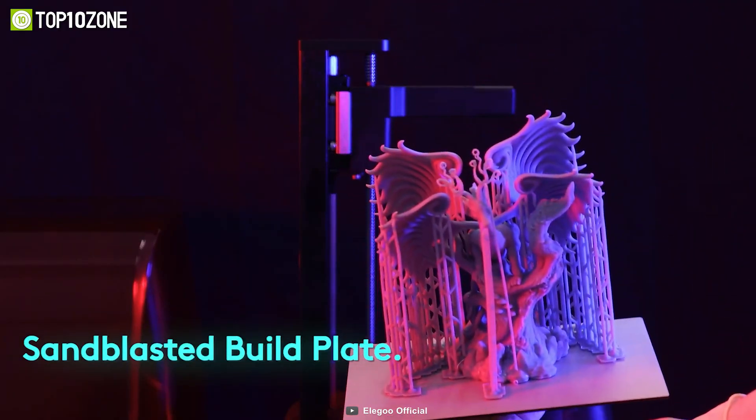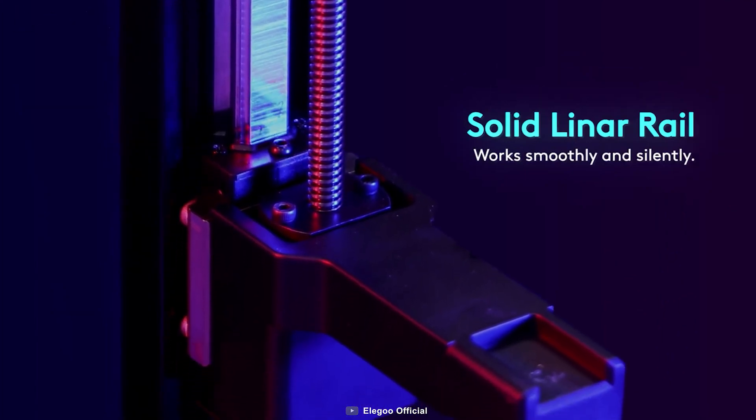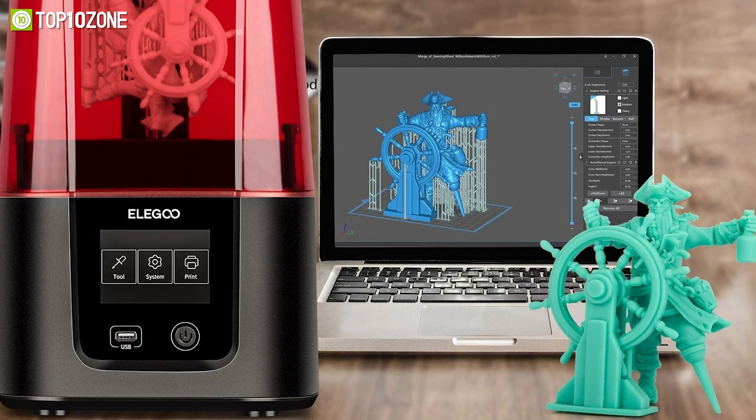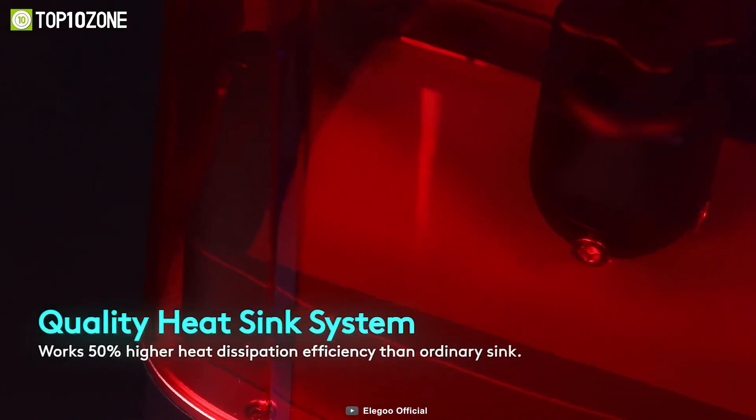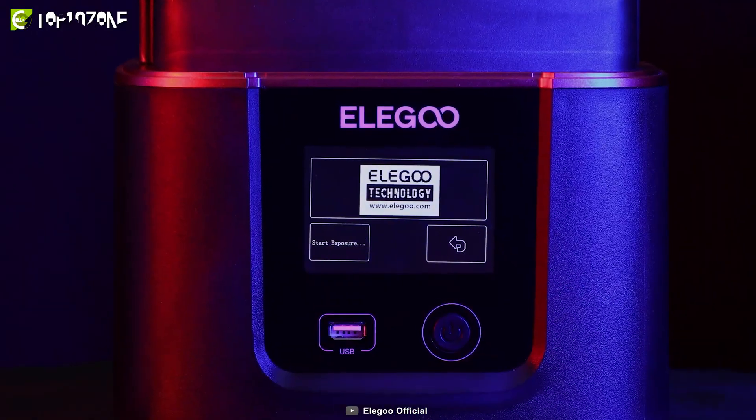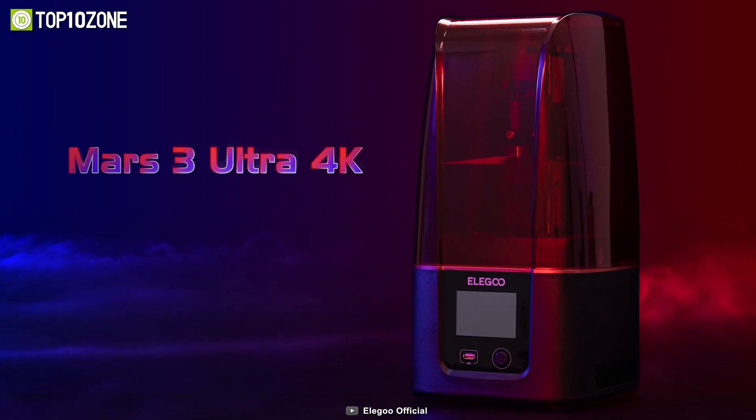It works smoothly and silently thanks to the solid linear rail and sandblasted build plate. Moreover, the model sticks firmly and does not easily fall off. The heat sink system works with 50% higher heat dissipation efficiency than ordinary sinks, while an upgraded COB UV light source structure makes fine prints possible.